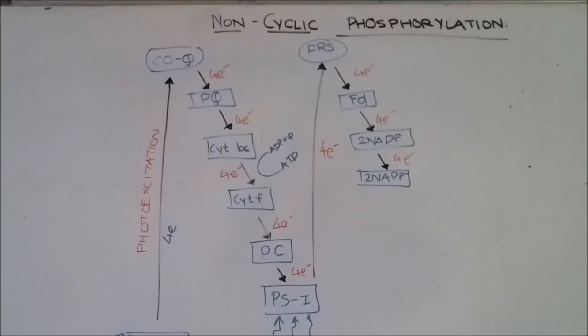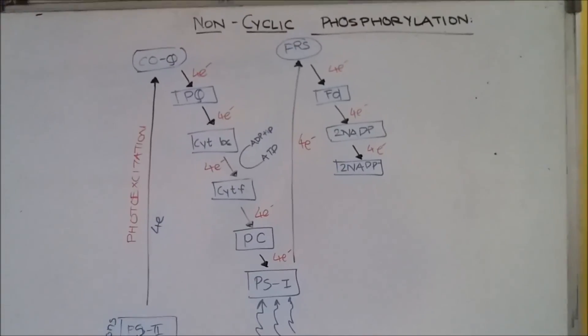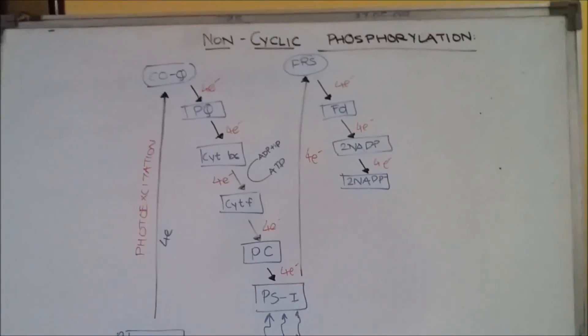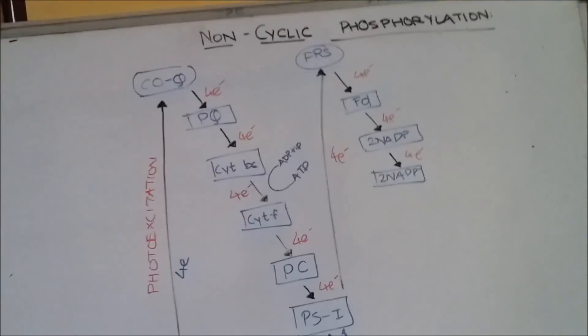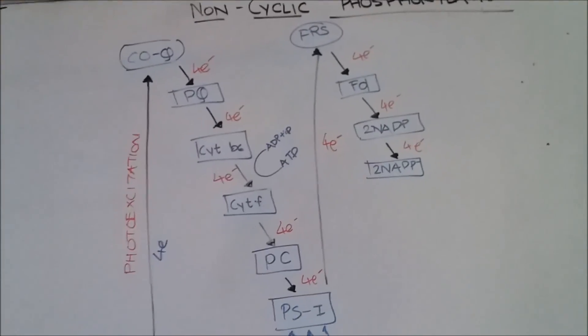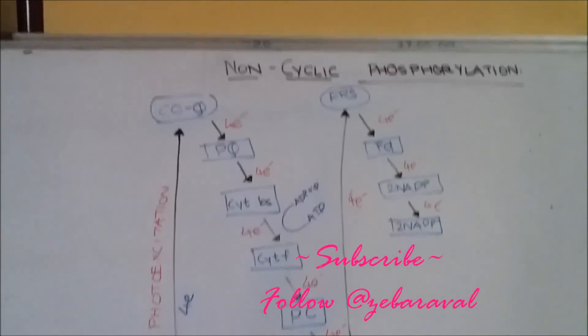So there you have it, the structure or the cycle of non-cyclic phosphorylation. Since we are not getting our electrons back to where we started, which is PS2 center, it is non-cyclic.